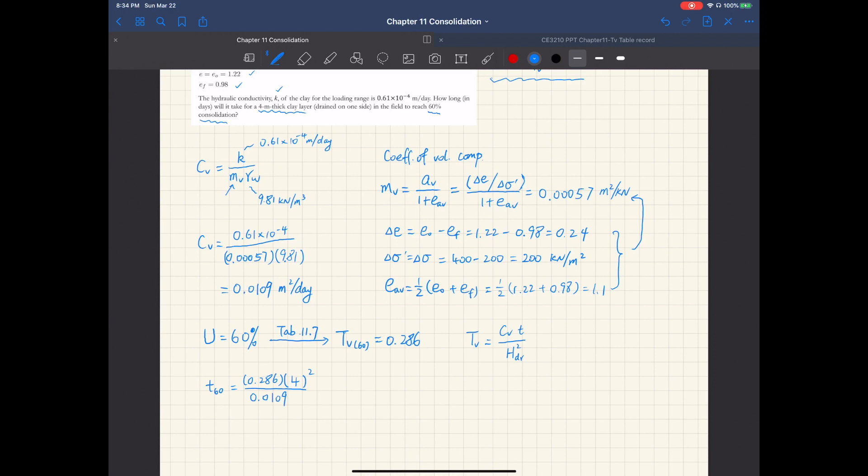So a couple of things to pay attention to here. First, for this single drainage case, this maximum drainage distance H sub DR is the thickness of the clay layer, which in this case is 4 meters.